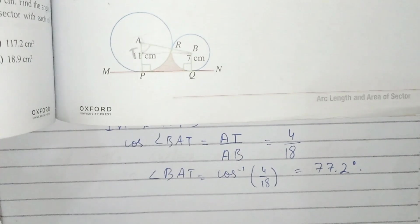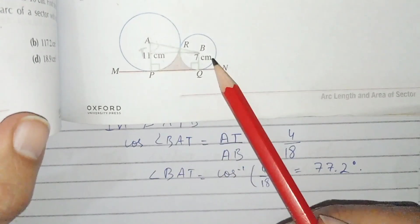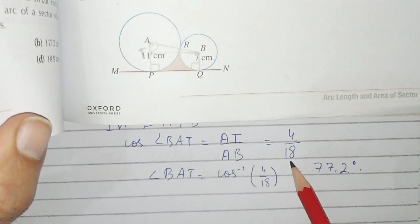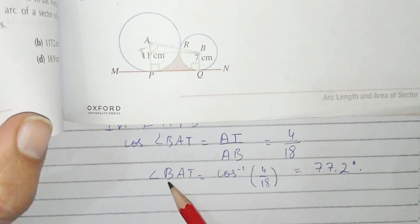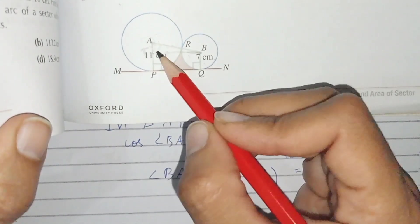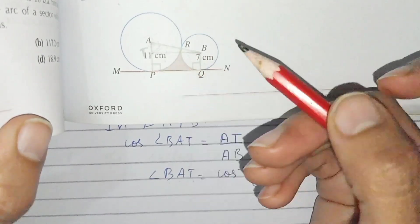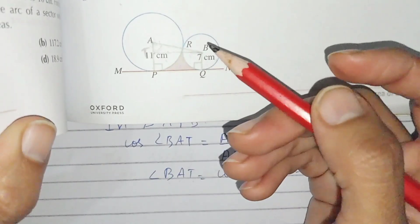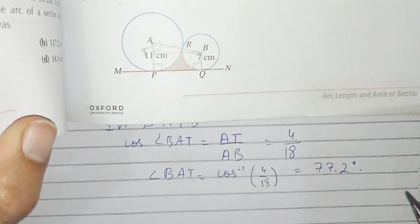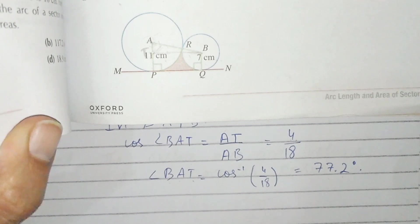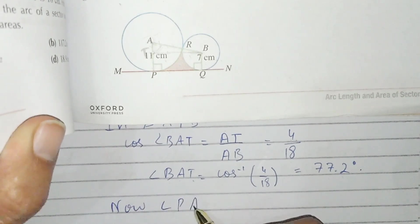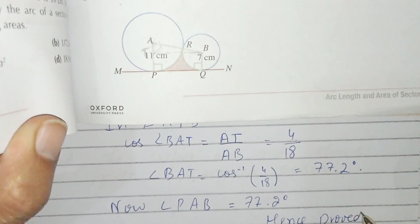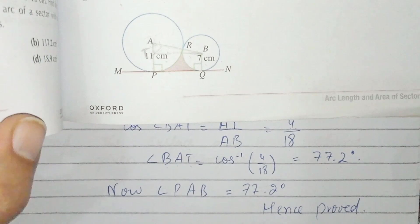In triangle ATB, the base AT = 4 and AB = 18 (from adding 11 and 7). Calculating gives angle BAT = 77.2 degrees. This is also equal to angle PAQ = 77.2 degrees. Hence proved. Part one is solved.